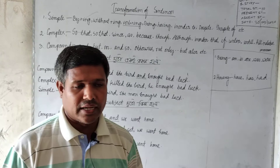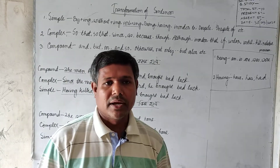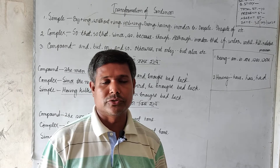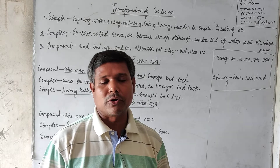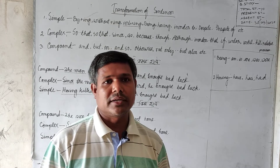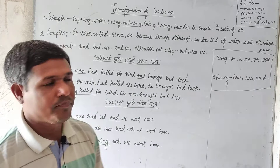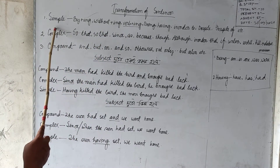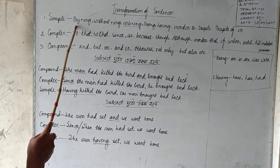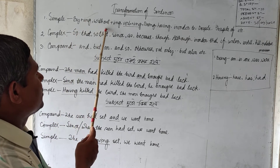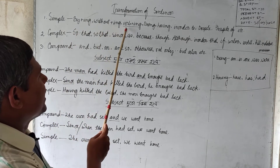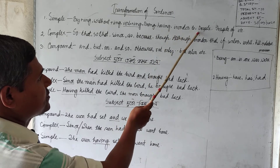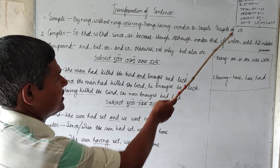First, I am going to take a class about simple sentences. The connectors used are: by plus ing, without plus ing, bar plus ing, being, having, in order to, despite, in spite of, and so on.